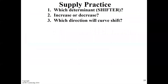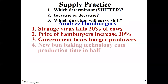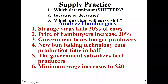So here's what we're going to do — let's do one together. It's the hamburger market. A strange virus kills 20% of the calves. Could someone tell me what determinant that is? Resources. Is it going to increase or decrease supply? Decrease. So the curve is going to shift. Great job — that's what I want you to do for the next five.